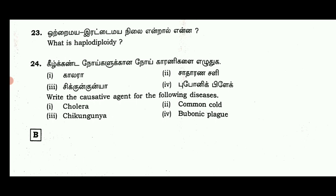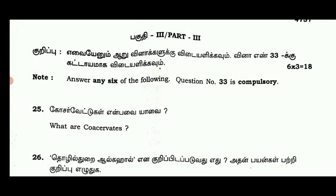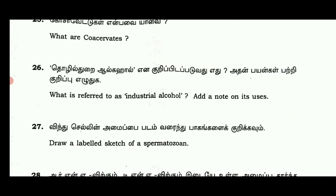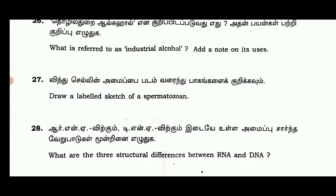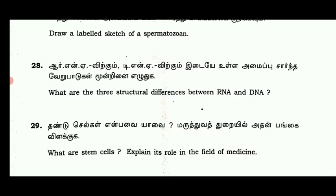Question 18. What is referred to as industrial alcohol? Add a note on its uses. Draw the labelled sketch of spermatozoan. What are the three structural differences between RNA (ribonucleic acid) and DNA (deoxyribonucleic acid)?